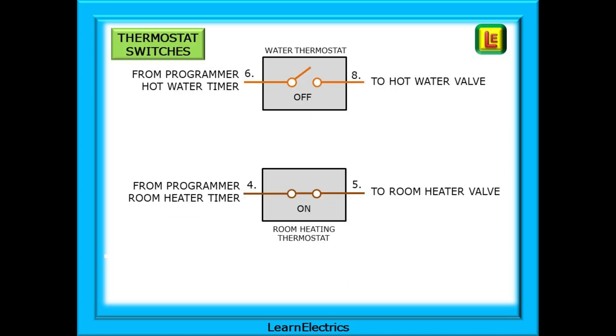When the temperature at a thermostat falls below the set value the microswitch will close. If there is 230 volts from the programmer at the thermostat input the voltage will pass through to the output. Depending on which thermostat has a closed switch voltage will pass to the relevant valve.